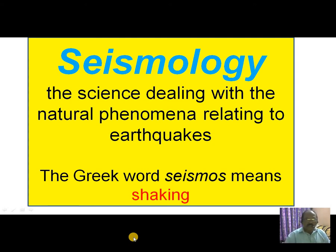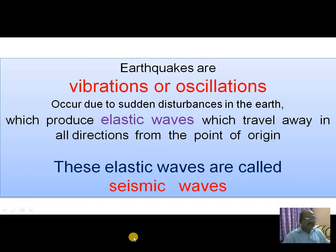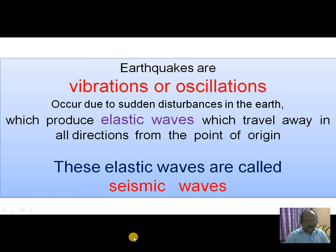Hence, seismology is the science dealing with the natural phenomena relating to earthquakes. Earthquakes are simply vibrations or oscillations. These vibrations or oscillations occur due to sudden disturbances in the earth, and they produce elastic waves which travel away in all directions from the point of origin. These elastic waves are known as seismic waves.